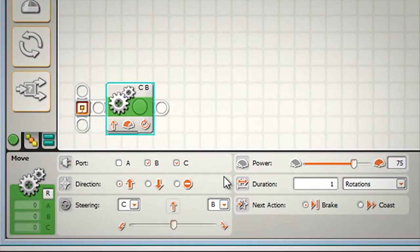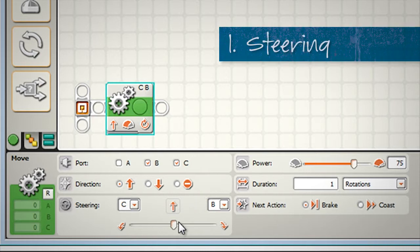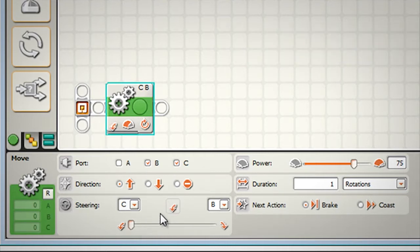With the configuration of this one single move block, there are a few parameters we need to adjust. The first parameter we need to adjust is the steering. For this challenge it doesn't matter if we're turning left or right as long as we're doing a nice sharp turn. For today I'm going to make my robot turn to the left nice and sharply.